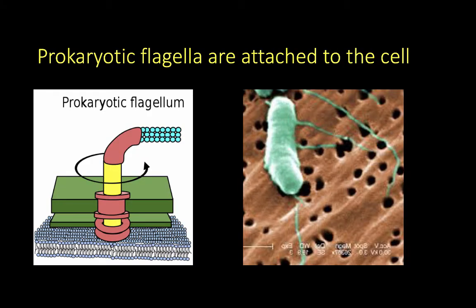In contrast, prokaryotic flagella are made entirely of proteins. Multiple proteins form the basal body, which consists of rings that are embedded in the cell membrane anchoring the flagella. Another set of proteins form the hook, which is bent at an angle of roughly 90 degrees and attaches to the basal body. Proteins called flagellin form a long hollow cylinder attached to the hook, and flagella can have as many as 50,000 flagellin proteins.